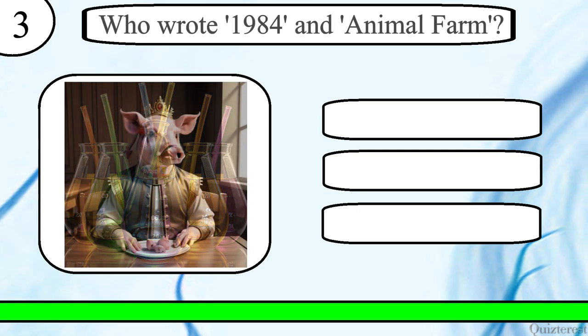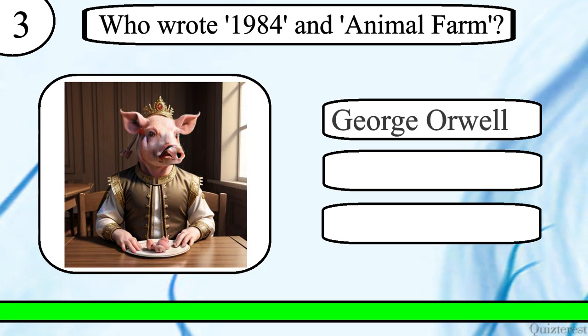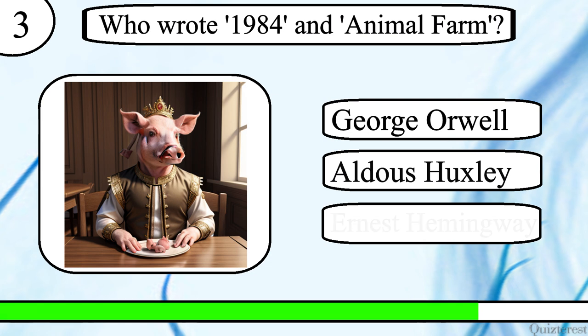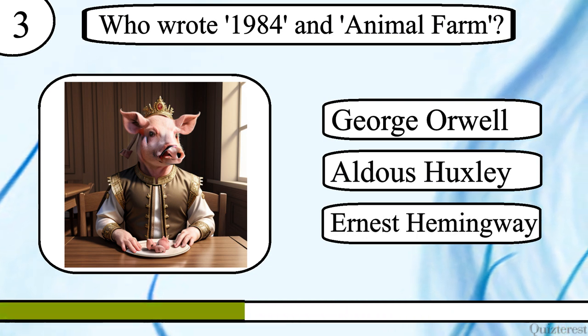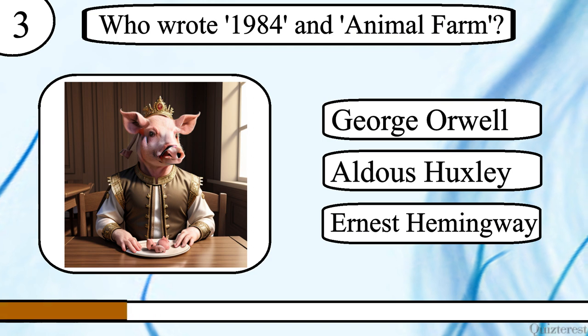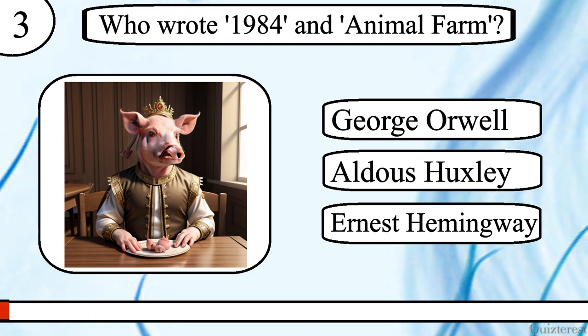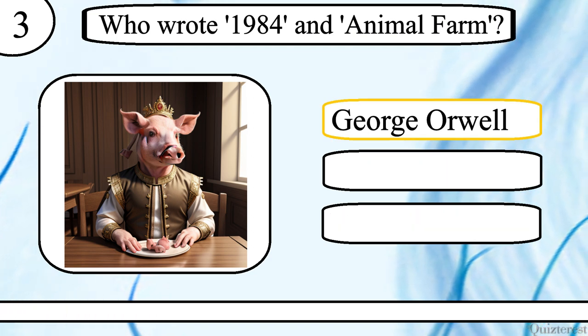Question 3. Who wrote 1984 and Animal Farm? George Orwell, Aldous Huxley or Ernest Hemingway? The correct answer is George Orwell.